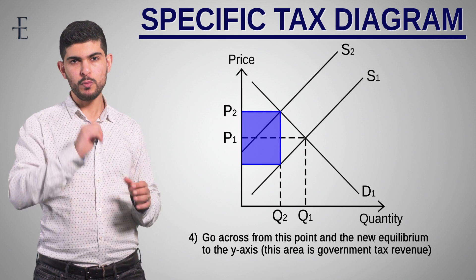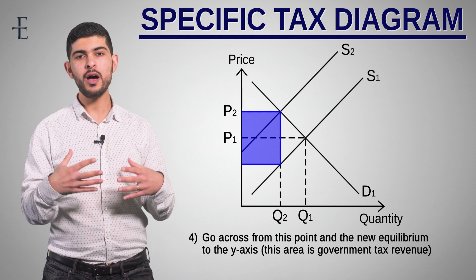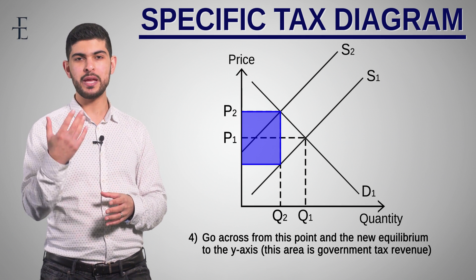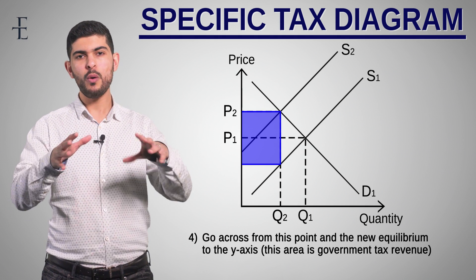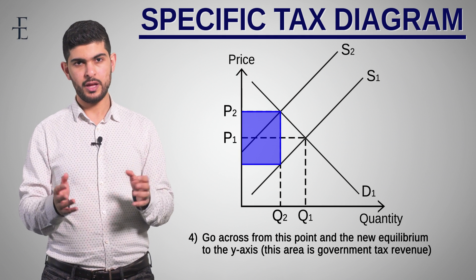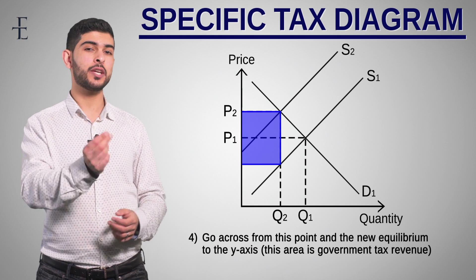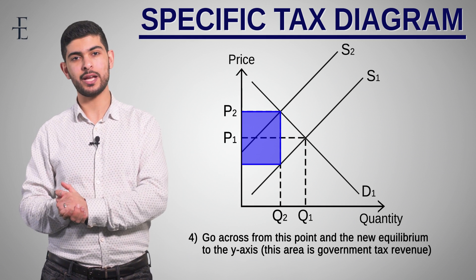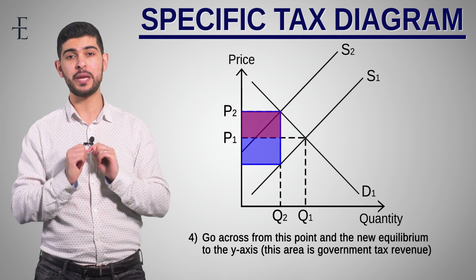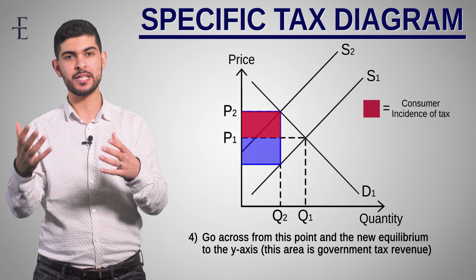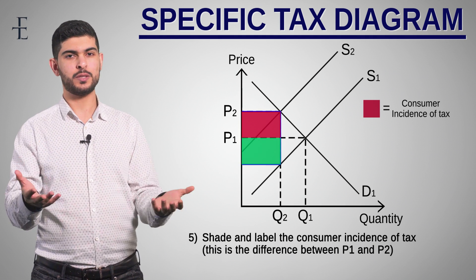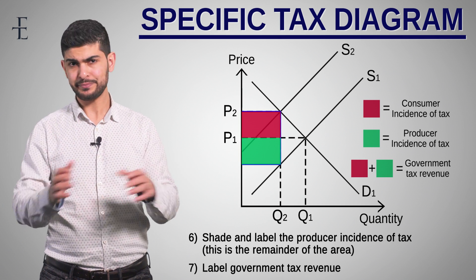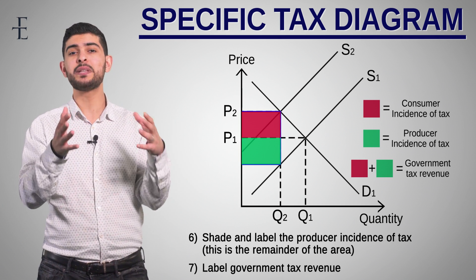There are two more things to shade and label. The first is consumer incidence of tax — how much of the tax is being paid by the consumer. What price did the consumer initially pay? P1. What do they now pay following the tax? P2. The difference between P2 and P1 represents the consumer incidence of tax. Whatever's left is the producer incidence of tax — what the producer has to pay. Always shade and label according to consumer and producer. That's everything you need to do for a specific tax diagram.